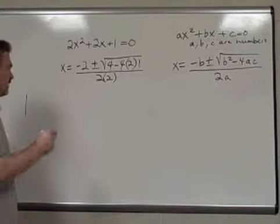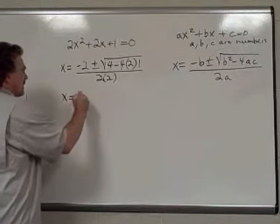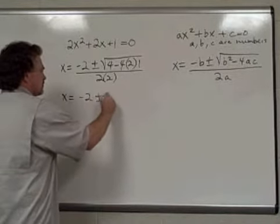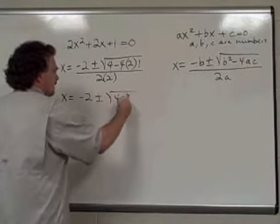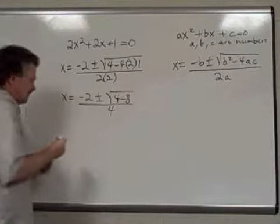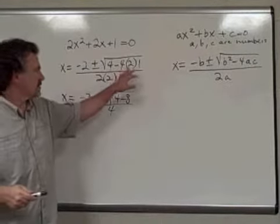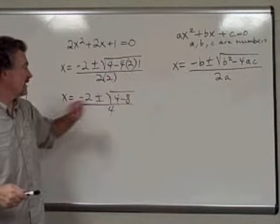And now we'll simplify that radical expression. x equals negative 2 plus or minus the square root of 4 minus 8, all of that over 4. 4 times 2 is 8, times 1 is 8.